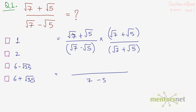In the numerator we have (a + b)(a + b), which is (a + b)². So we write (√7 + √5)², and expand it as a² + 2ab + b².